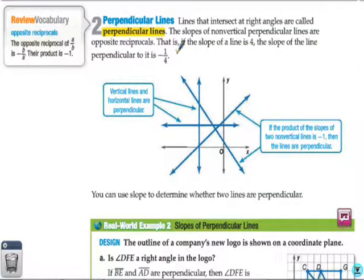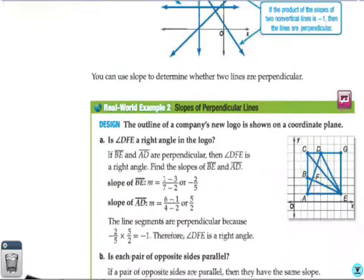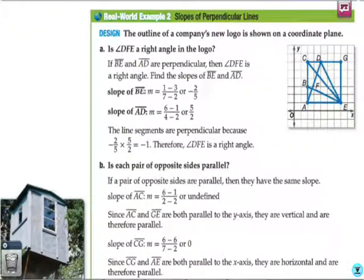Perpendicular lines are lines that have opposite reciprocal slopes. So, opposite means that the sign changes. Reciprocal means that the numerator and denominator switch places. Vertical lines and horizontal lines are always perpendicular. That's important to know. So, let's take a look at how we can use this stuff in a real world situation.